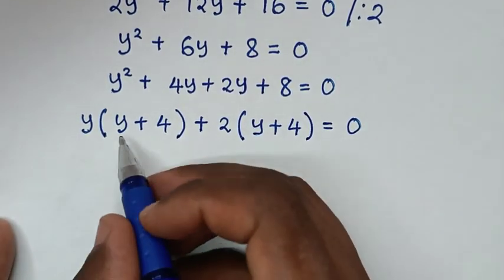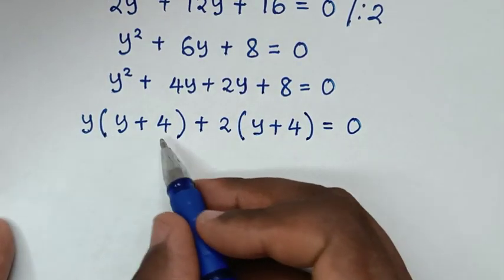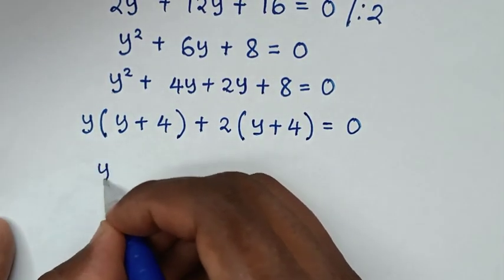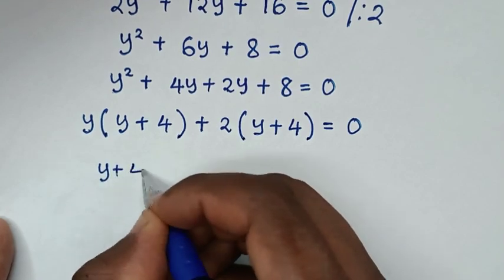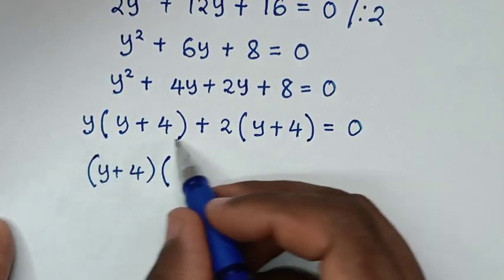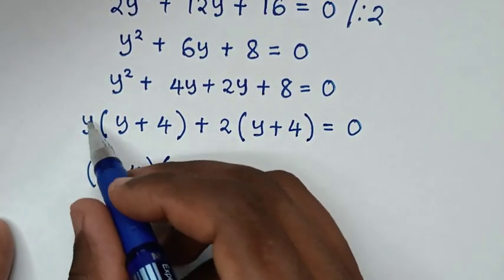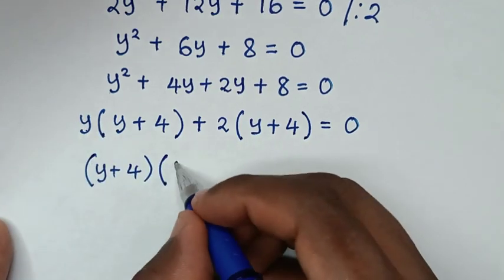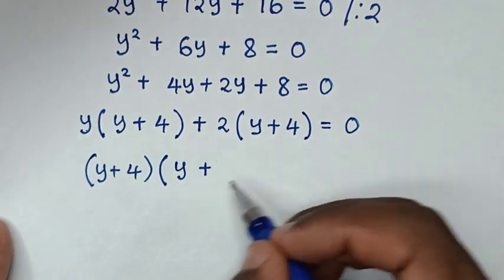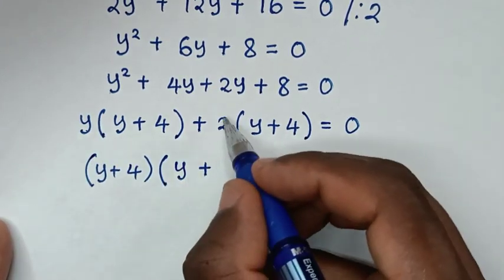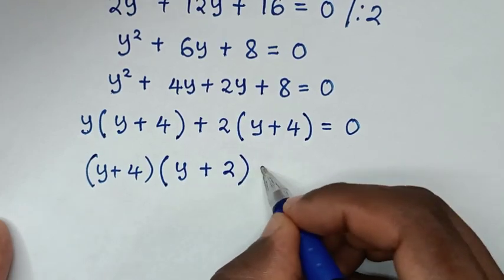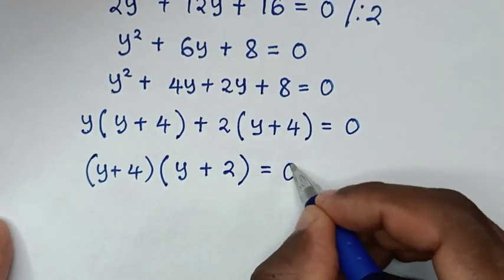Now (y plus 4) is a common factor. Taking it out gives (y plus 4)(y plus 2) equals 0.